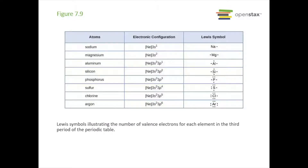Here are some Lewis symbols for the third period of the periodic table, showing their electron configurations and then their Lewis symbols.